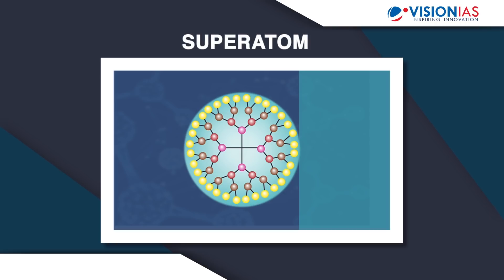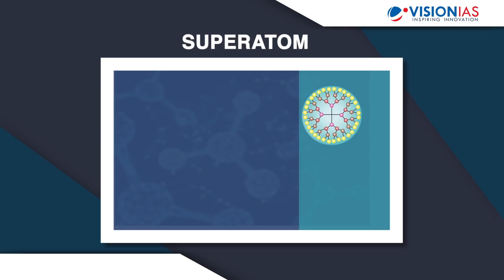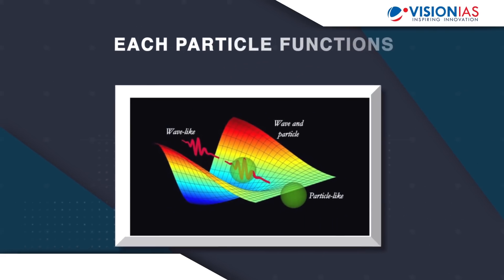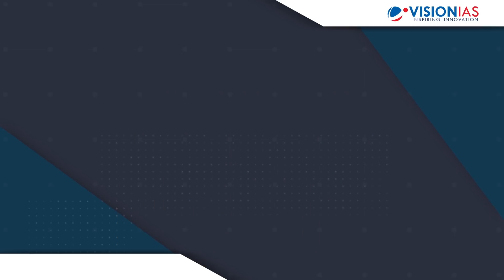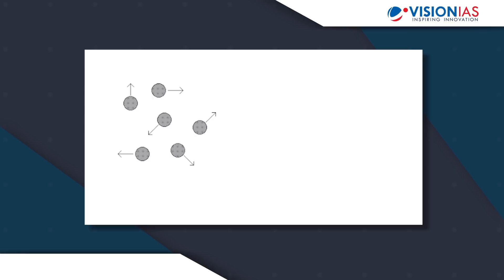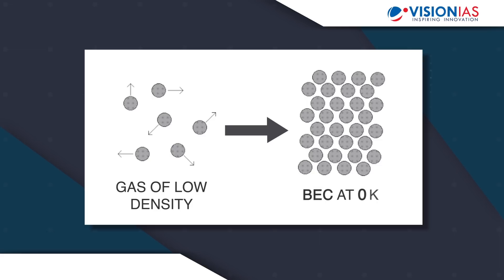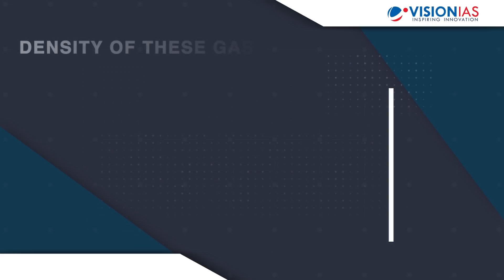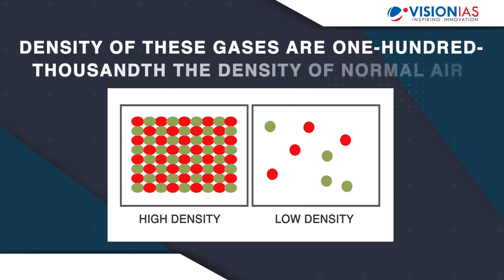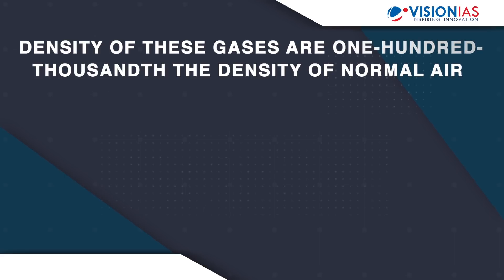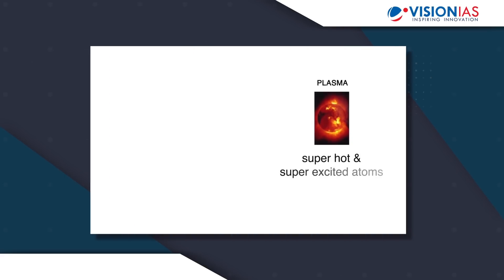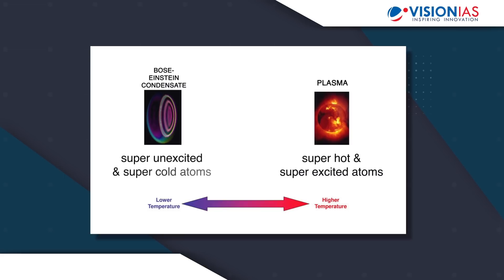There are no longer thousands of separate atoms — they all take on the same qualities. At this point, the atoms become a single entity with quantum properties, wherein each particle also functions as a wave of matter. In essence, the Bose-Einstein condensate is formed by cooling a gas of extremely low density to super low temperatures — near absolute zero, or zero Kelvin, or minus 273 degrees Celsius. The density of these gases is about 1/100,000th the density of normal air. If plasma has super hot and super excited atoms, the atoms of the Bose-Einstein condensate are the total opposite — super unexcited and super cold.